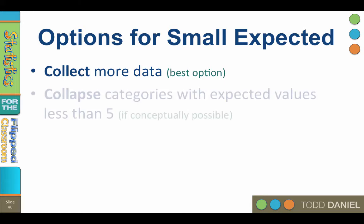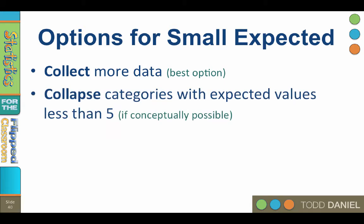Another option is to collapse categories with expected values less than 5. This only works if the categories are conceptually related. For example, if you're using categories from a high school with freshmen, sophomores, juniors, and seniors, but the cell for seniors had an expected value less than 5, you could combine the juniors and seniors into a category called upperclassmen, because those class standing categories are conceptually related.